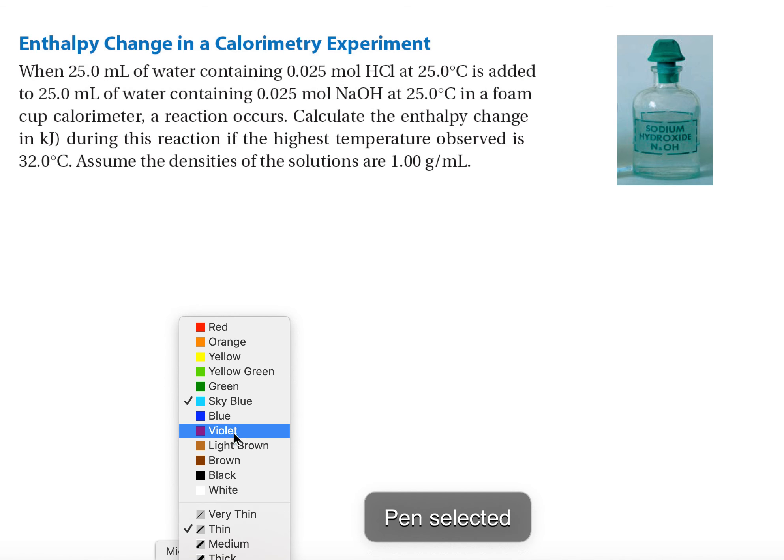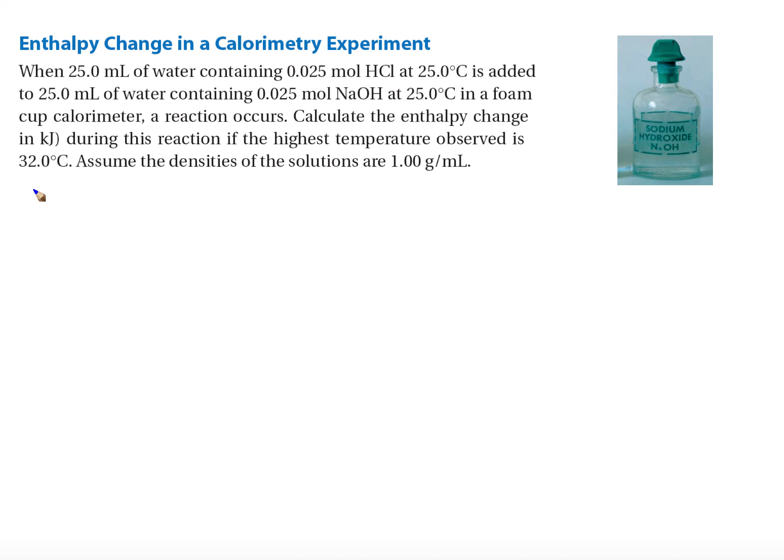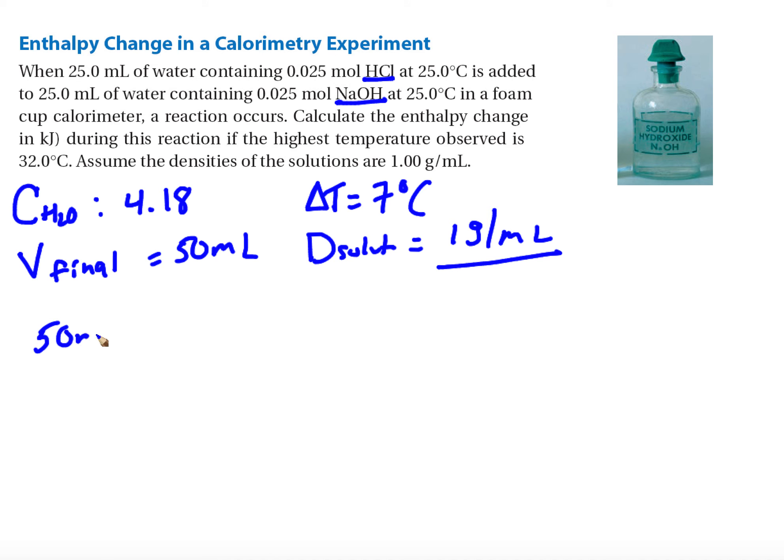We know our specific heat of water is 4.18. Our final volume, since we have 25 from HCl and 25 from NaOH, is 50 milliliters. We have an initial temperature of 25 degrees celsius and our final is 32, so our change in temperature is seven degrees celsius. Our density of solution is one gram per milliliter. First I need to find my mass: I have 50 milliliters times one gram over one milliliter, which gives me 50 grams.